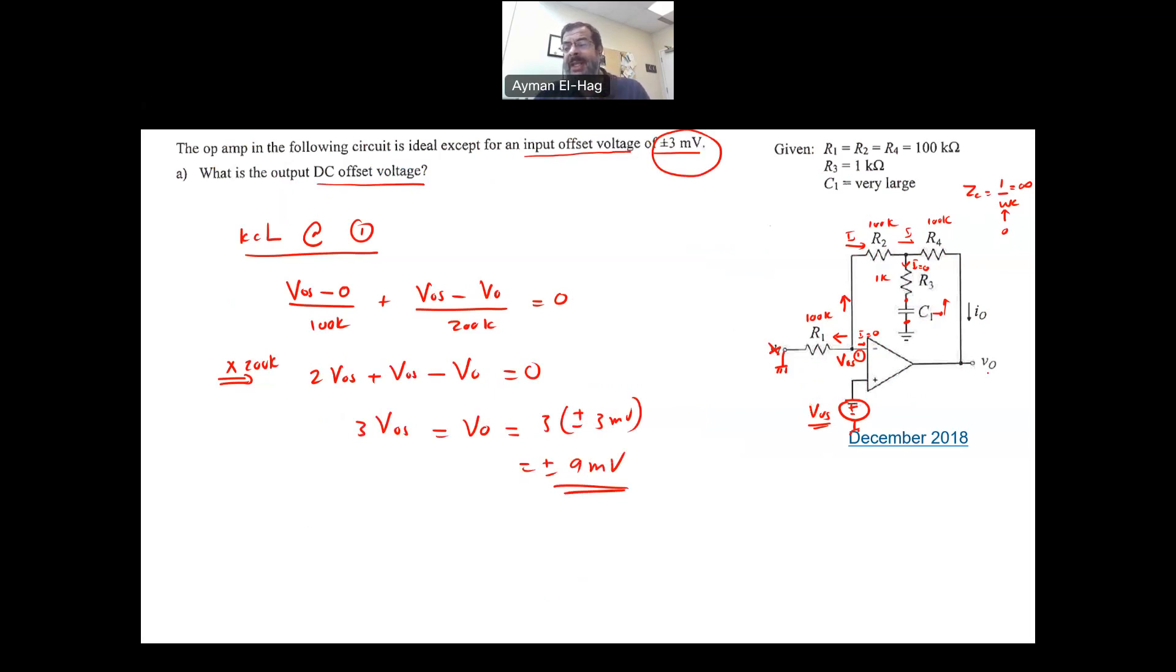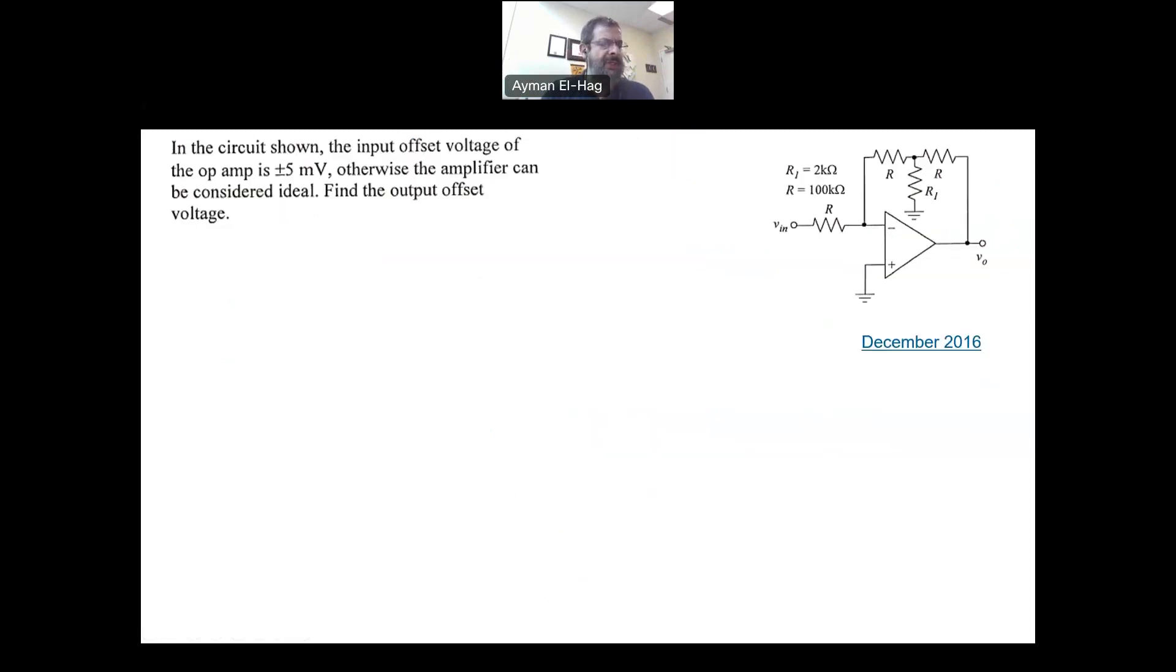Now, if you want to see the V output due to both V input and V offset, what you do, you will now short circuit V offset, and you assume that this is an ideal op amp, and you solve for this, try to find V output due to the V input, and then the V output using the principle of superposition, you just add this output voltage due to the offset, and the output voltage due to an ideal op amp. Let's see another question here.